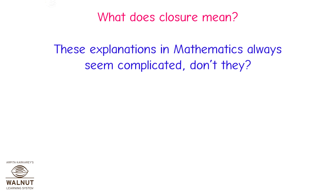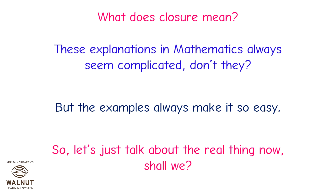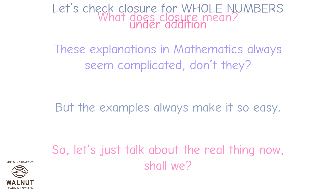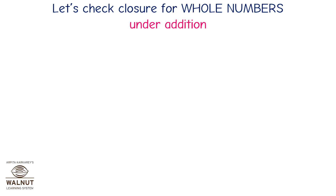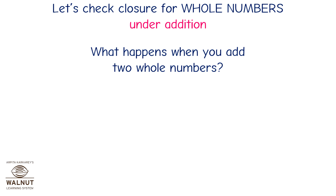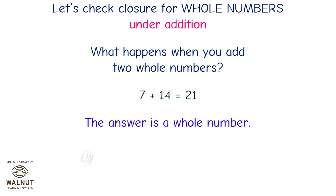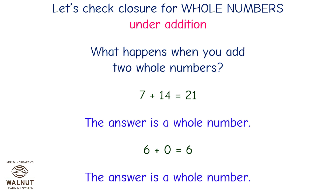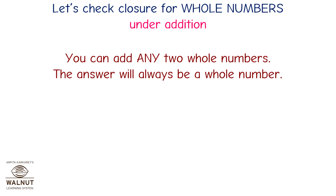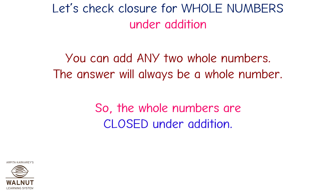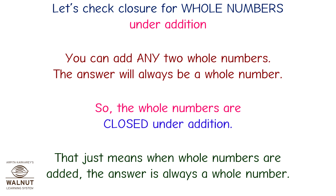These explanations in mathematics always seem complicated, but examples make it easy. Whole numbers are numbers from zero onwards. Let's check closure for whole numbers under addition. 7 plus 14 is 21 — a whole number. 6 plus 0 is 6 — a whole number. You can add any two whole numbers and the answer will always be a whole number. So whole numbers are closed under addition.